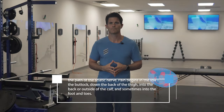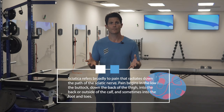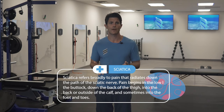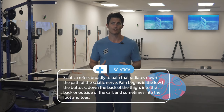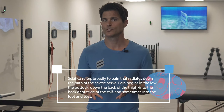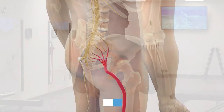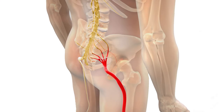What is sciatic pain? Sciatica refers broadly to pain that radiates down the path of the sciatic nerve. The traditional course of this pain begins in the low back and radiates down to the buttocks, down the back of the thigh, and into the back and outside of the calf, and sometimes even into the foot and toes.